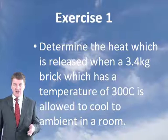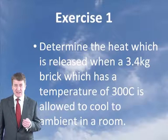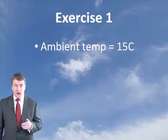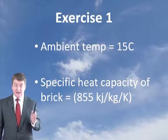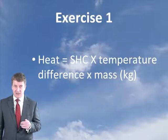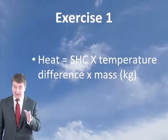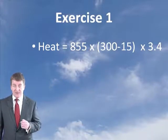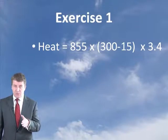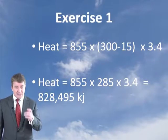Let's do an exercise. Determine the heat released when a 3.4 kilogram brick at 300 degrees C is allowed to cool to ambient temperature in a room — approximately 15 degrees C. The specific heat capacity of the brick is 855 joules per kilogram per kelvin. The heat released equals specific heat capacity × temperature difference × mass: 855 × (300 − 15) × 3.4, which gives the heat energy released on cooling that brick.